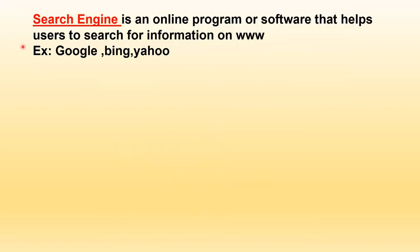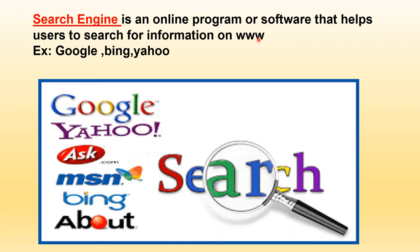For search engine optimization, we should first understand what a search engine is. A search engine is an online program or software that helps users search for information on the World Wide Web. It acts as a filter of information available on the internet, allowing users to quickly find genuine information without going through numerous irrelevant web pages. The goal of a search engine is to solve searchers' queries and keep them coming back. Examples include Google, Bing, and Yahoo. Google is the best and most popular search engine in the world, while Bing is a Microsoft product.